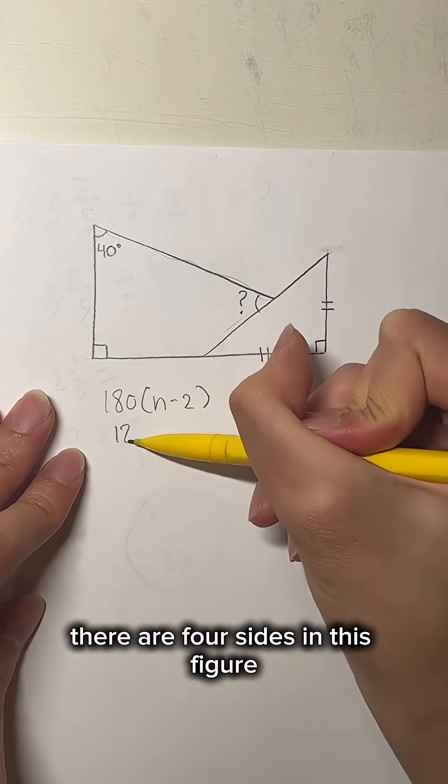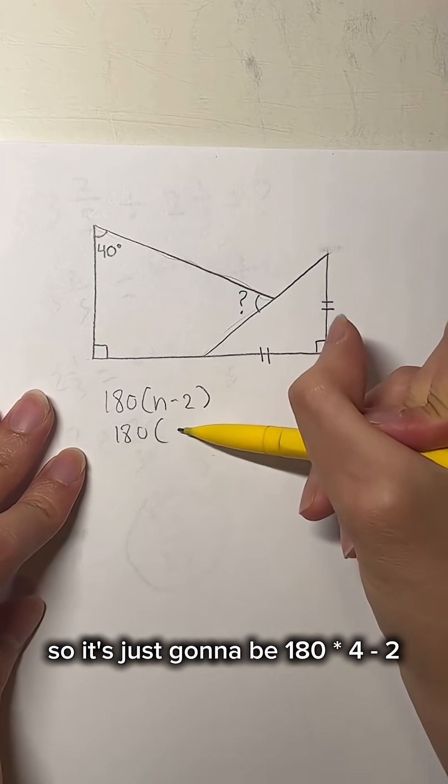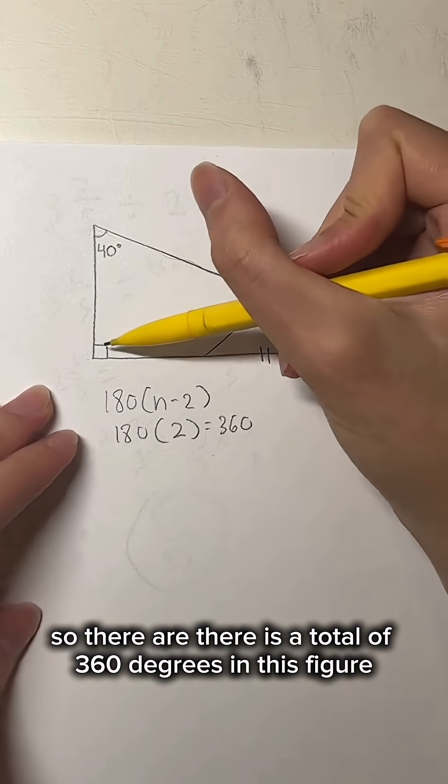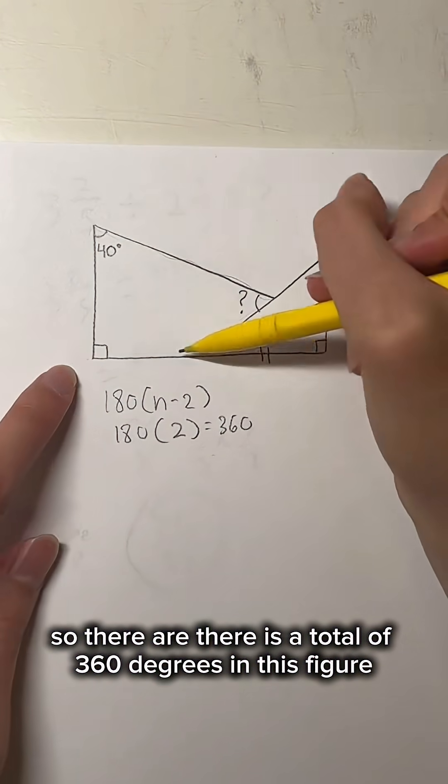There are four sides in this figure, so it's just going to be 180 times 4 minus 2, which is 2, and 180 times 2 is 360. So there is a total of 360 degrees in this figure.